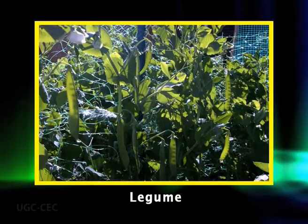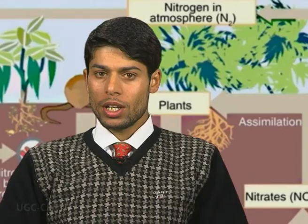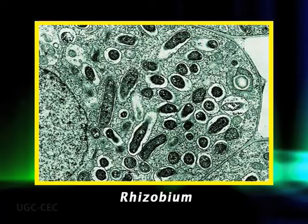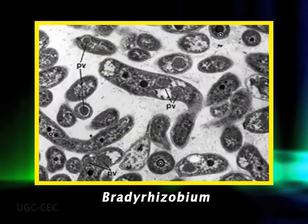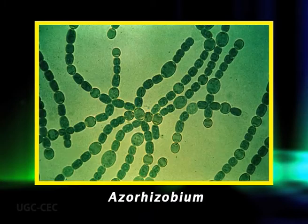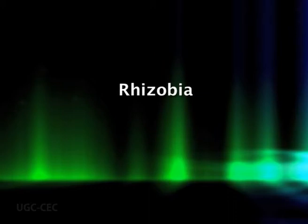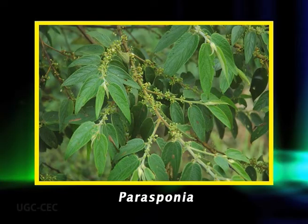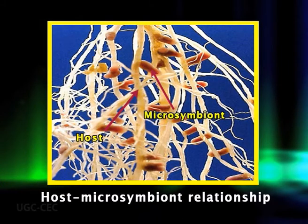In the case of legumes, the microsymbiont is a bacterium of one of three genera: Rhizobium, Bradyrhizobium, or Azorhizobium. Collectively, these organisms are referred to as Rhizobia. Curiously, only one non-leguminous genus, Parasponia, which belongs to the family Ulmaceae, is known to form root nodules with a Rhizobia symbiont.